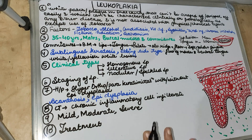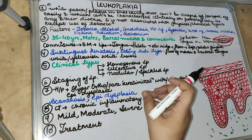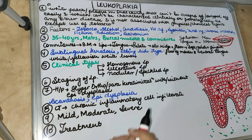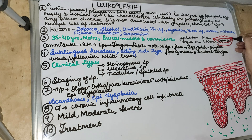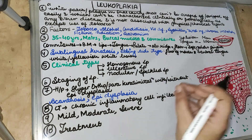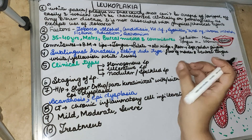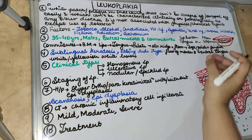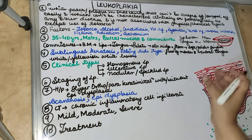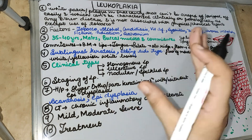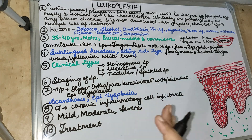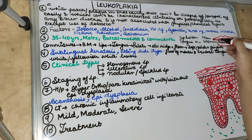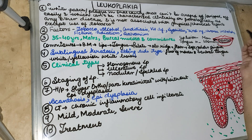Leukoplakia usually occurs in the age group of 35 to 40 years and above. Males are more frequently involved. The common site is the buccal mucosa and commissure of the lip — the lesion starts from the commissure of the lip. Most commonly in men it is the lip lesion, and in women it is the tongue lesion.